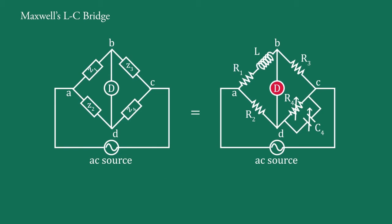This is detector D, which is generally either a pair of headphones or a null detector, and this is an AC source. This bridge is used to measure self inductance L in terms of a standard capacitance C4 and two resistances R2 and R3.